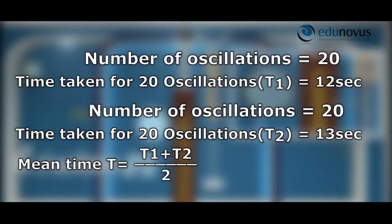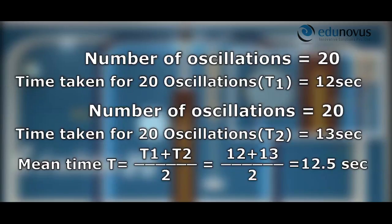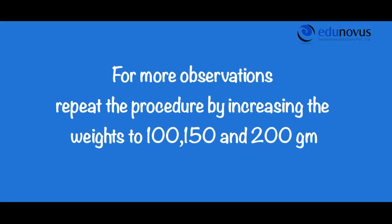For more observations, repeat the procedure by increasing the weights to 100, 150, and 200 grams. In each case, calculate the time period T and the square of the time period T².